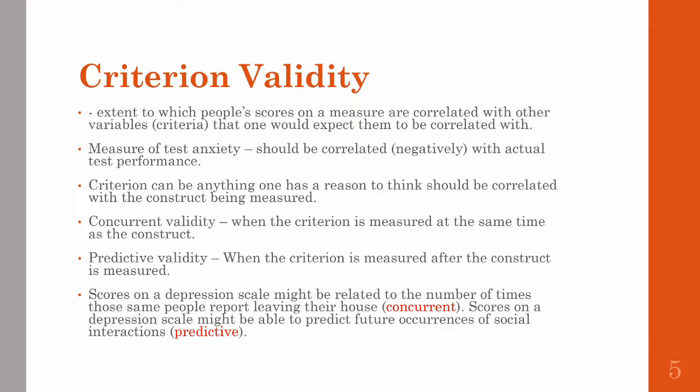We can also identify two different subtypes of criterion validity. If the criterion you're using is measured at the same time as the construct you're measuring, this is referred to as concurrent validity. If the criterion is taken sometime in the future or after the construct you measured, this is referred to as predictive validity. For example, if you measure depression using a new depression scale and also measure how often people report leaving their house at the same time, that would be concurrent validity. Scores on your measure that predict future occurrences of social interactions would be predictive validity, assuming those two things are not measured at the same time.